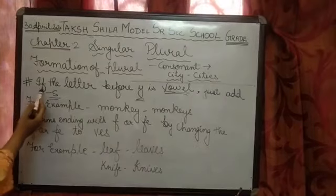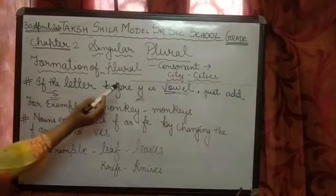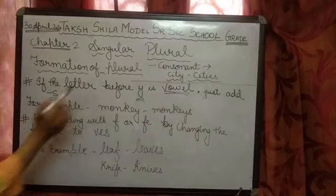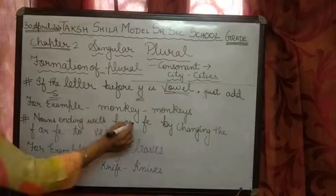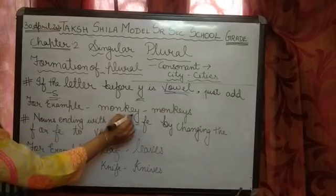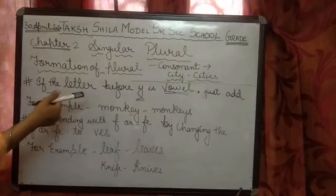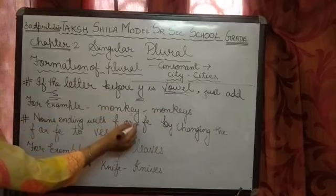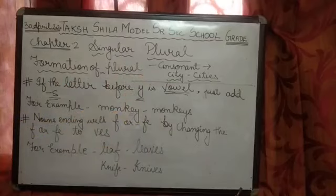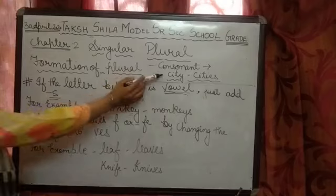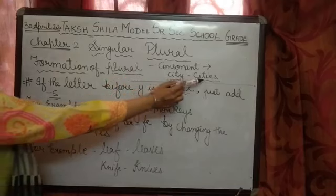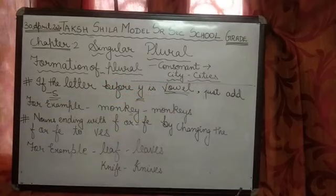Let's go to the next rule. If the letter before Y is a vowel, just add S. For example, monkey becomes monkeys. So here Y is there and we have just added S. Before Y there is a vowel. In the previous rule, when the letter before Y was a consonant, we added IES — like city becomes cities, where before Y there is a consonant, so we added IES.